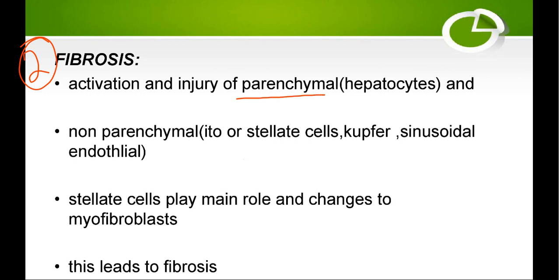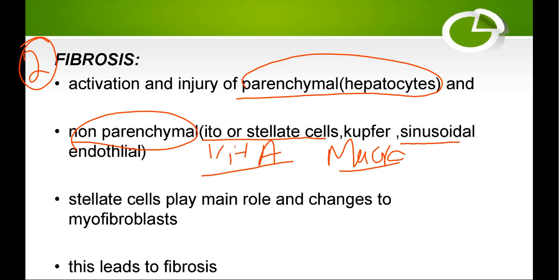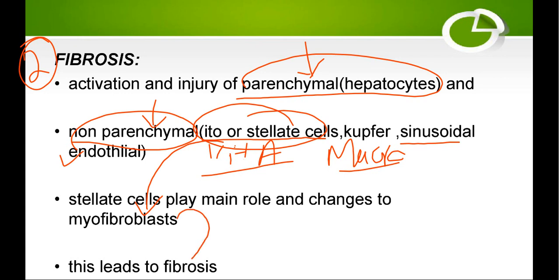Why does fibrosis occur? The liver is made up of parenchymal (hepatocyte) cells and non-parenchymal cells, which include Ito (stellate) cells — whose normal function is to store vitamin A — Kupffer cells (the liver macrophages), and sinusoidal endothelial cells lining the liver sinusoids. Different etiologies cause injury to parenchymal or non-parenchymal cells. The Ito and stellate cells, due to chronic insult, transform into myofibroblasts, which then begin collagen deposition — causing fibrosis. This is stage two.